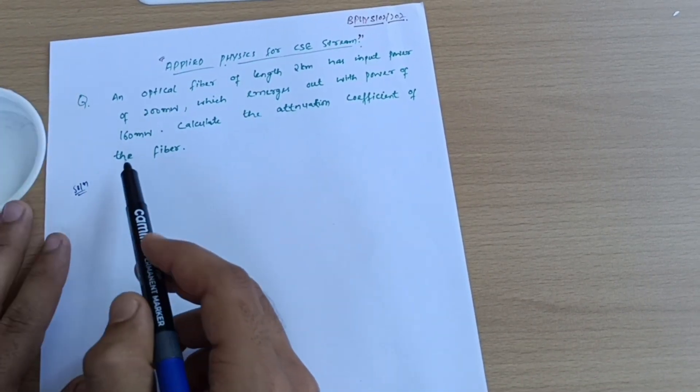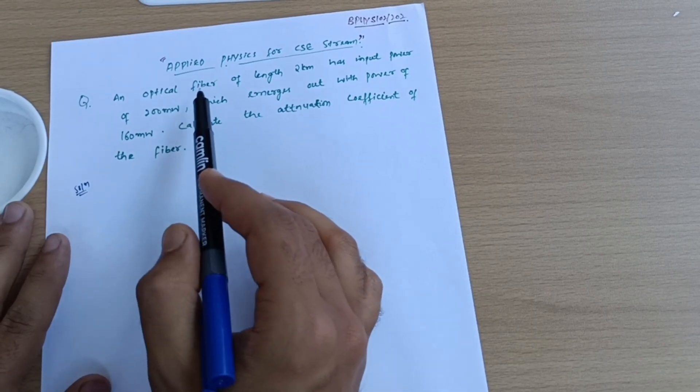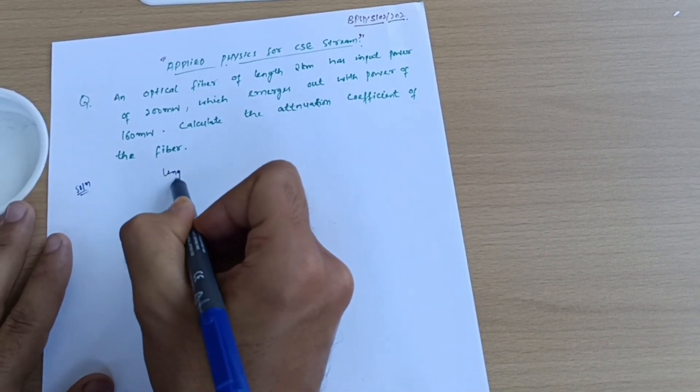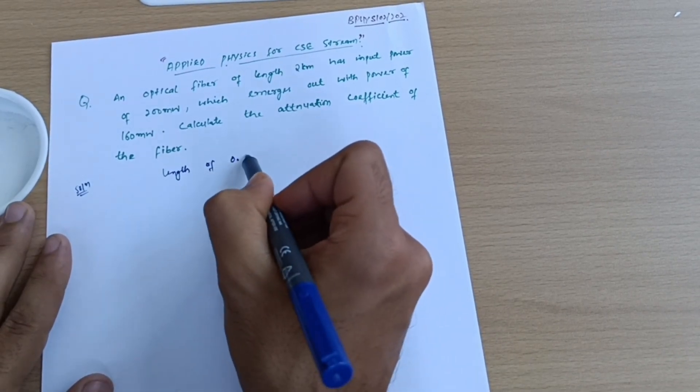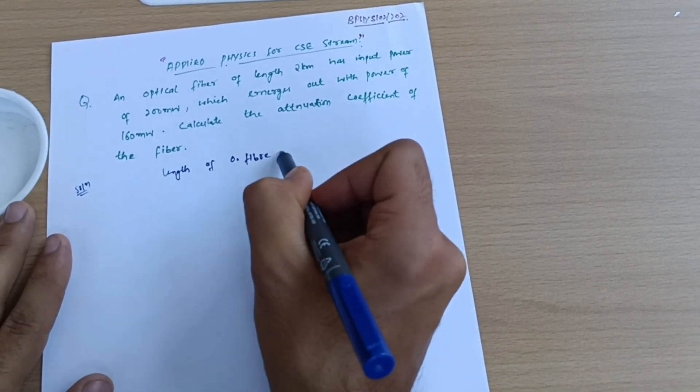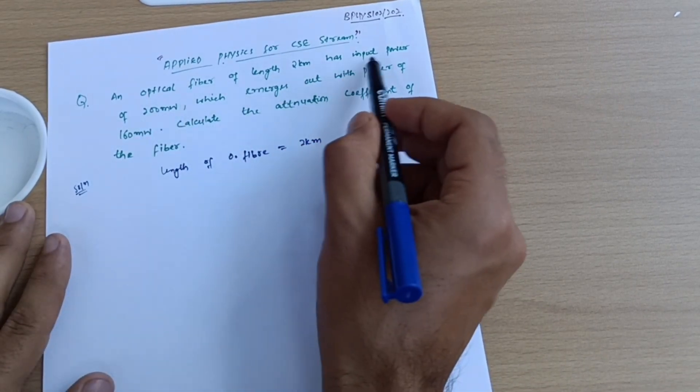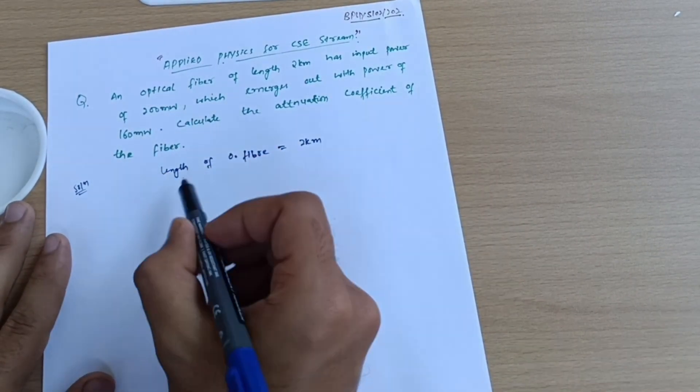Let us start with the simple solution. First of all, we will write down the given data. What is given? Optical fiber length - so I can write down in the solution: length of optical fiber is equal to 2 kilometers. Next is input power of 200 milliwatts, so I can write down here: